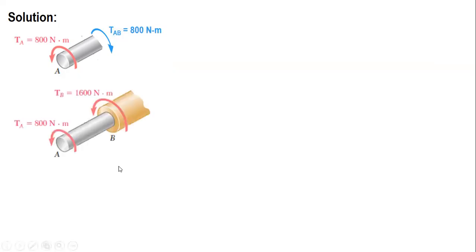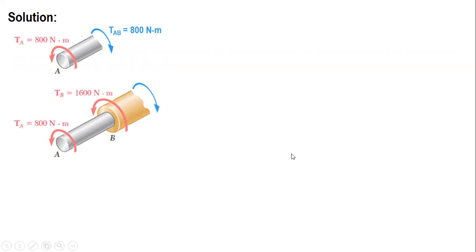The same applies for segment BC. There are two applied torques, 800 and 1600, acting in the same counterclockwise direction. So the resisting torque is clockwise with a magnitude of 2400 Nm.